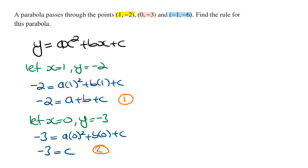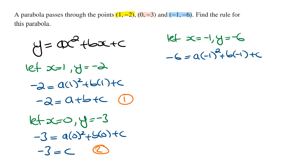Looking at the third coordinate (-1, -6), we let x = -1 and y = -6. Subbing into the rule: -6 = a(-1²) + b(-1) + c. Cleaning this up: -1 squared is positive 1, so this becomes -6 = a - b + c. This is our third equation in terms of a, b, and c.